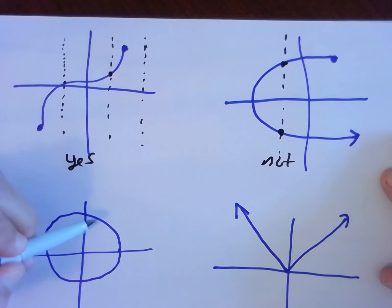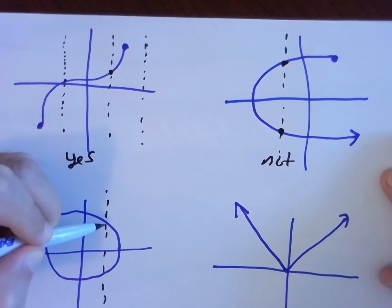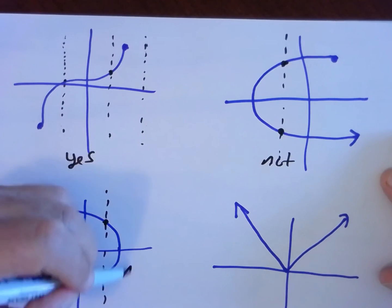Same in this picture down here. Does this circle represent a function? No. This vertical line right here, for example, hits the graph more than once. Not a function.